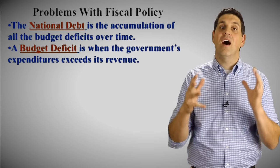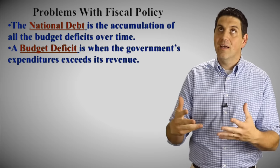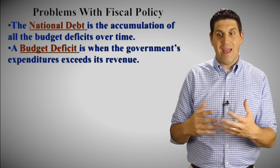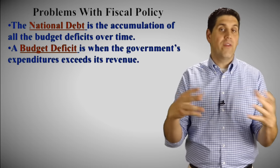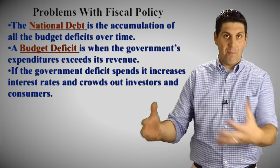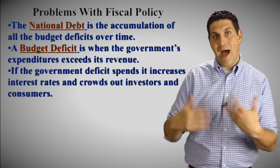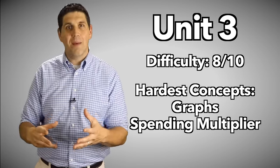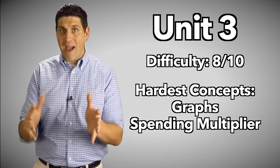The last thing in this unit is the idea of debt and the problems of fiscal policy. Increasing government spending and lowering taxes means you have to deficit spend — spend more than you bring in tax revenue — so the government goes into debt or runs a deficit for that year. The debt is the accumulation of all the deficits; the deficit is the amount overspent in a given year. You should understand crowding out: when the government does a lot of borrowing, that increases interest rates and crowds out investors and consumers from taking out loans. This unit gets eight out of ten difficulty — it has a bunch of key graphs, key concepts, and the multiplier, but it's the bulk of a macroeconomics class.